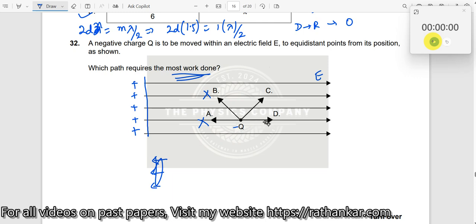But look at this here. D. D is asking about most work done. Which means what? It is very difficult to move against the field. If you want to move like this, you have to go against the attraction of the positive charge. So you need to do a lot of work over here.